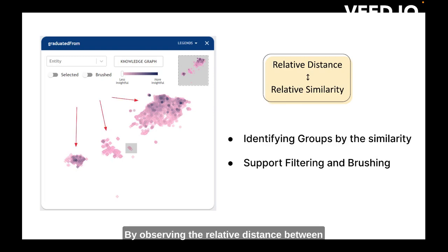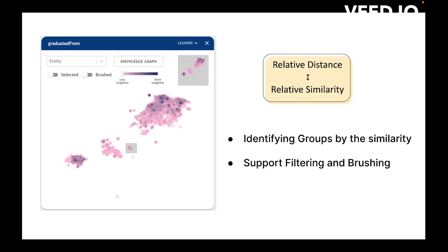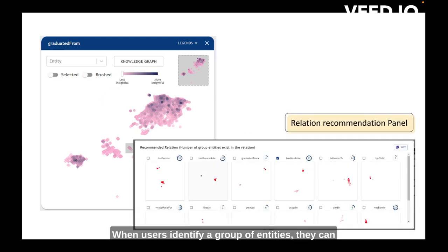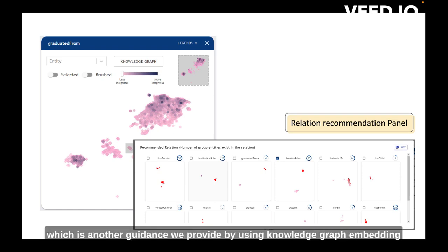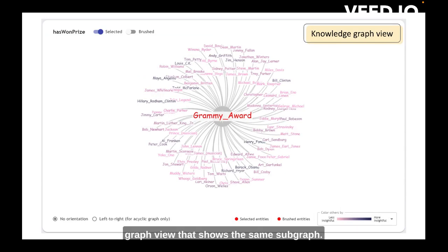By observing the relative distance between entities in the embedding view, users can obtain semantically similar or dissimilar entities. Users can also filter entities by peculiarity or brush entities into groups. When users identify a group of entities, they can inspect what other relations that group of entities are similar in, using the Relation Recommendation Panel — another guidance provided by Knowledge Graph Embeddings. To provide another perspective on linking patterns, each embedding view is accompanied by a Knowledge Graph view showing the same subgraph.